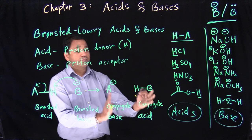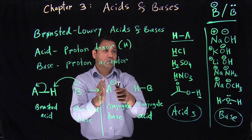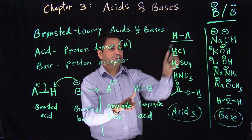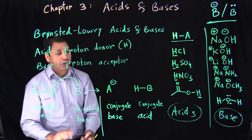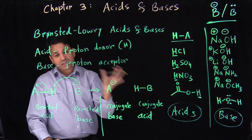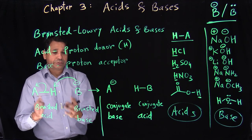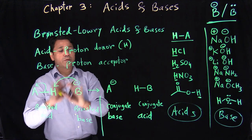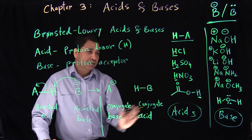We call them conjugate because they're on the product side. So A minus is a base and HB is your acid on the product side. This is a very important reaction — make sure you understand it, because all the reactions we'll do later will be similar to this. The only difference is instead of A it will be a real molecule, or instead of B minus you might have OH minus. Make sure you understand Brønsted acid vs. Brønsted base and conjugate acid vs. conjugate base.